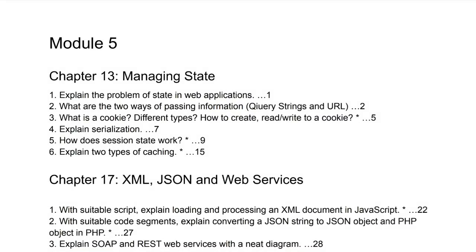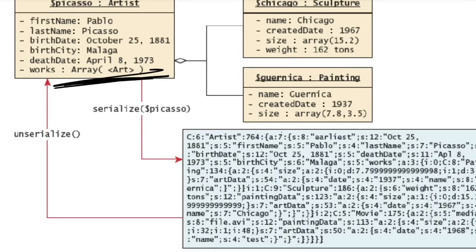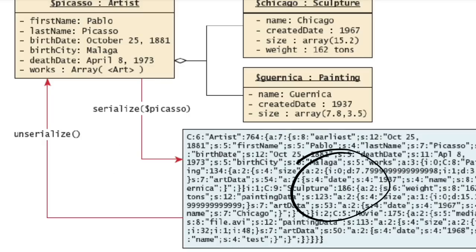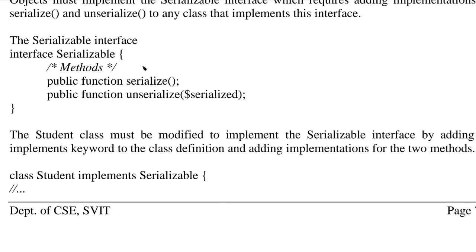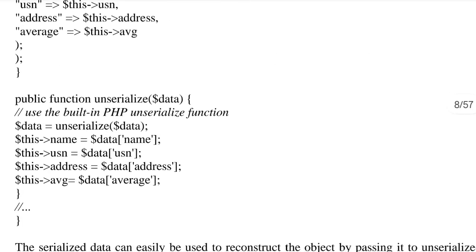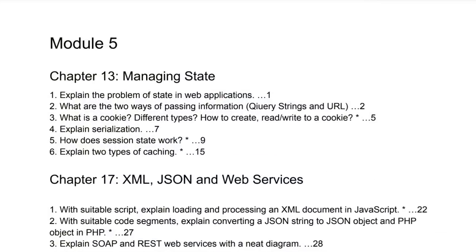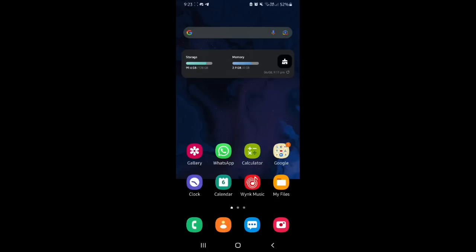The next question is about serialization. Serialization means converting normal text into an unreadable format, and deserialization converts it back to a readable format — this is done for security purposes when transferring information. There are two functions: serialize and unserialize. You pass a serialized object to the unserialize function to deserialize it.